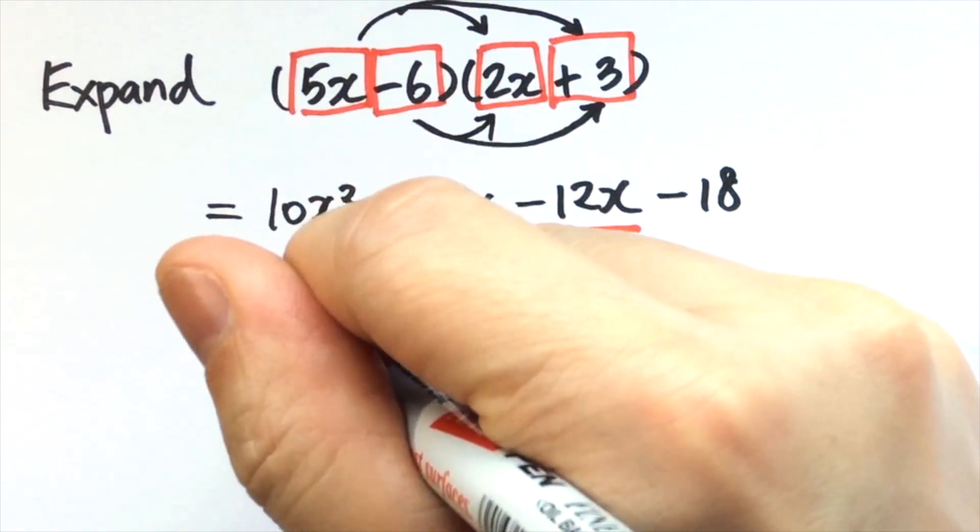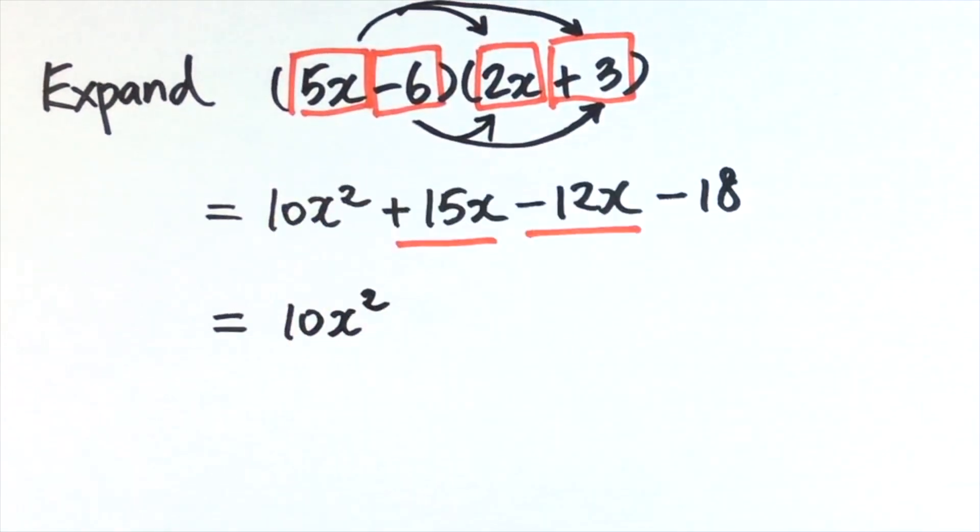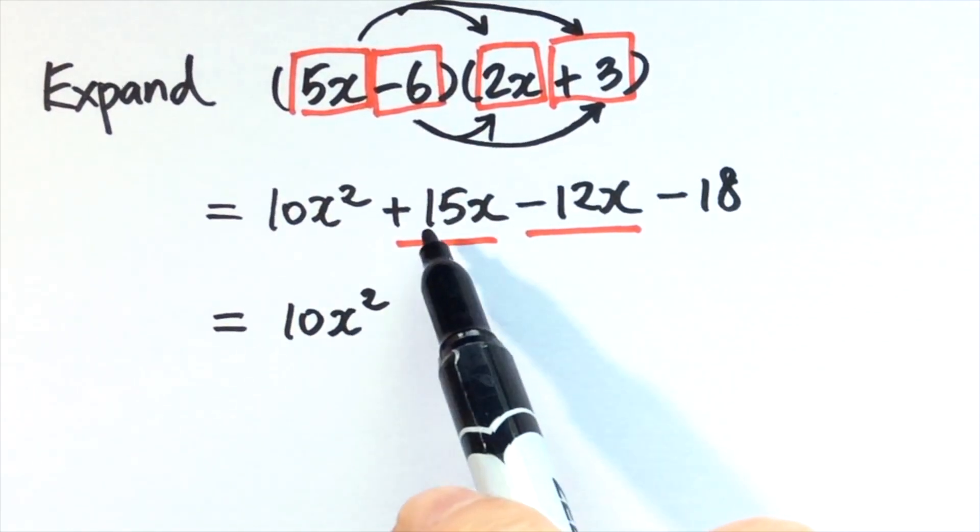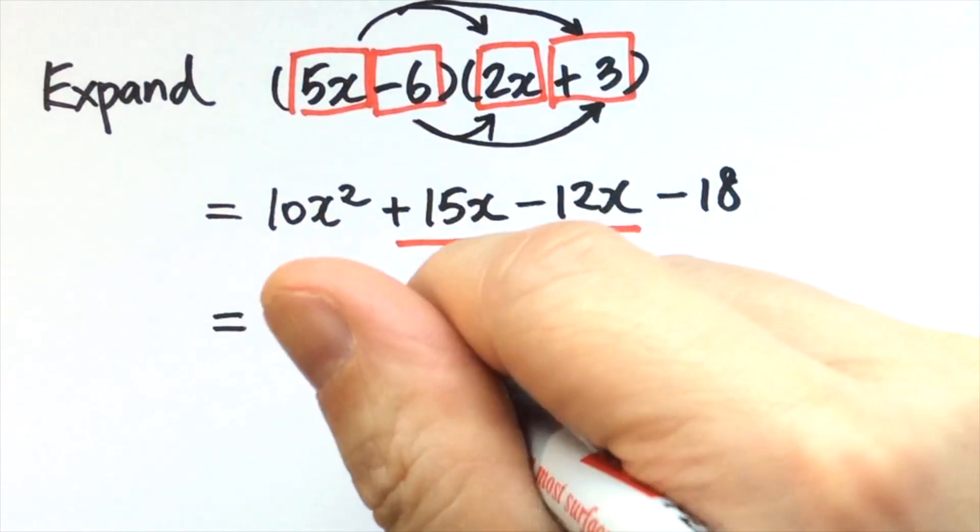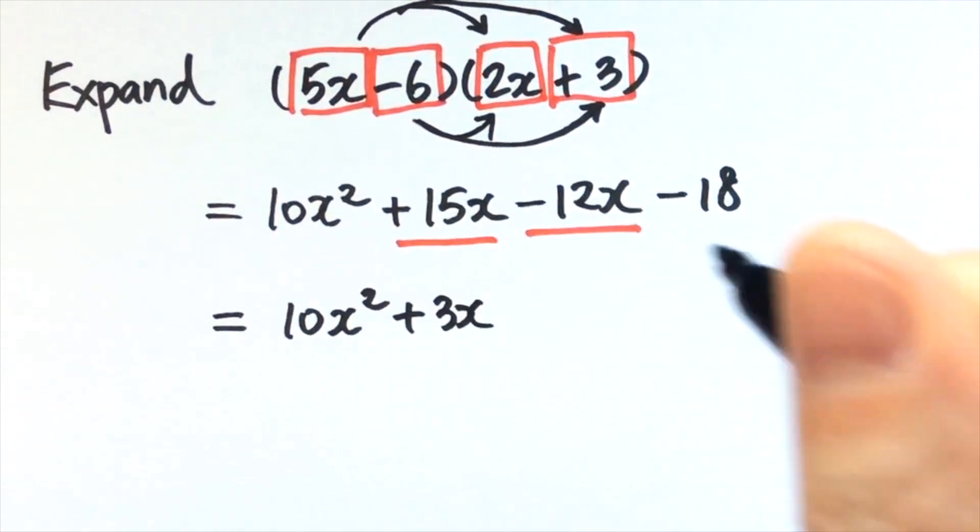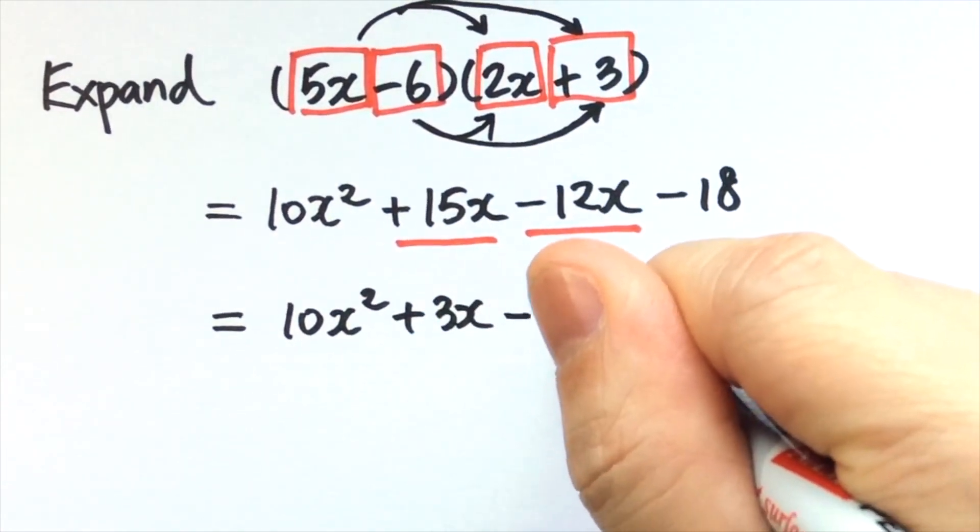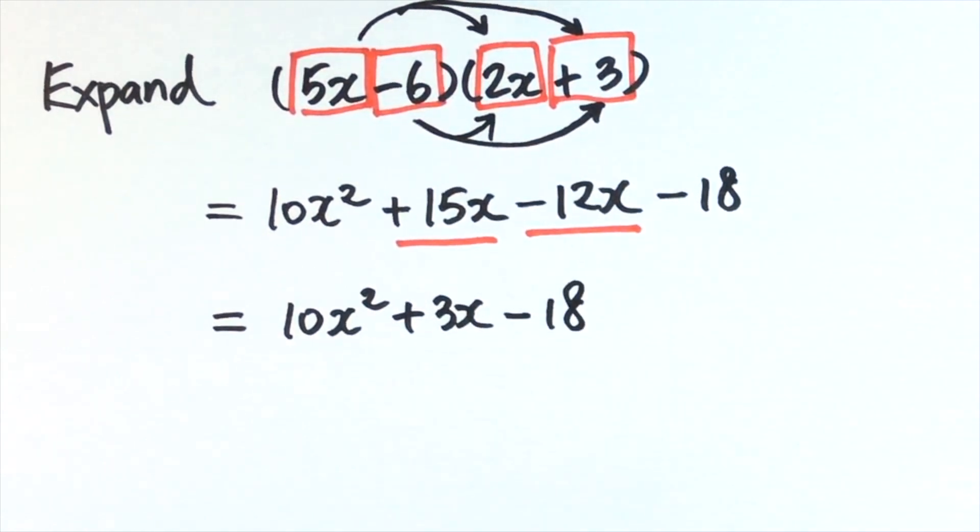We have to further simplify the expression. Plus 15x minus 12x gives plus 3x minus 18. So 10x² + 3x - 18. All these are unlike terms, therefore this is the final answer.